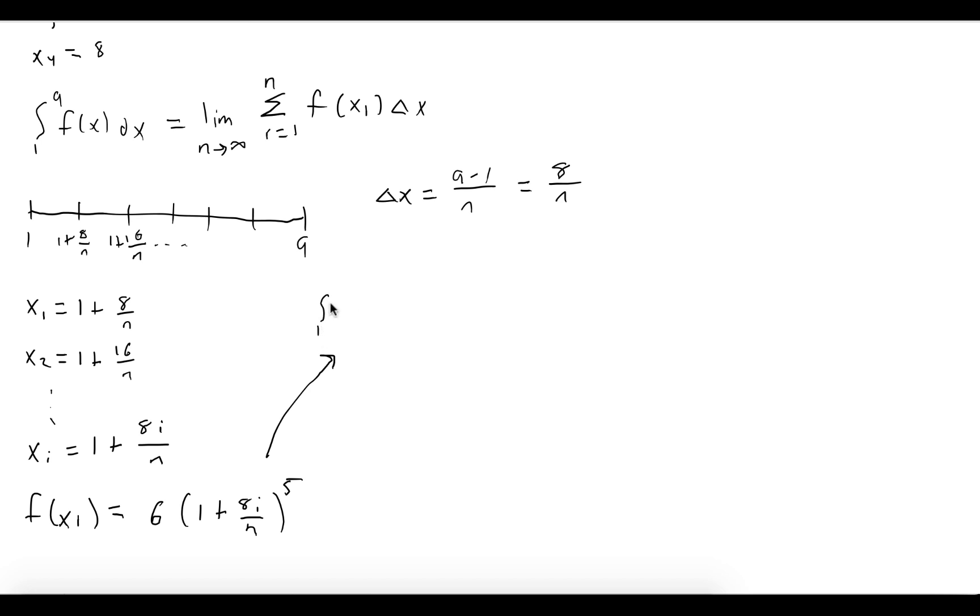So the integral from 1 to 9 of our function is equal to the limit as n goes to infinity—that's important, you've got to write that—the sum, also very important, i = 1 to n, and now our function, 6(1 + 8i/n)^5 times delta x. And that's it.